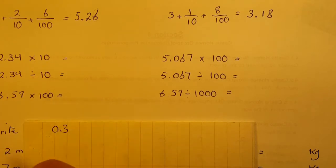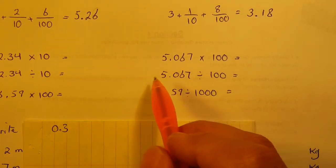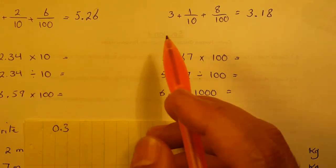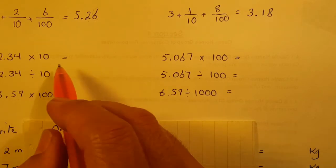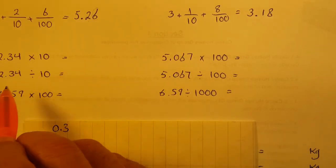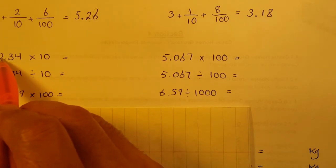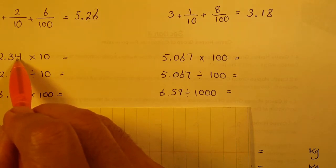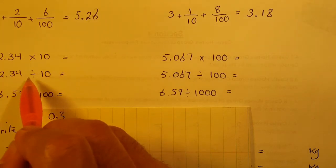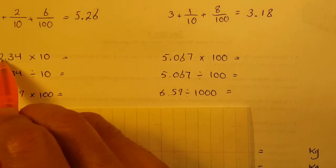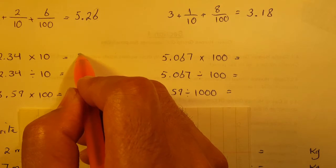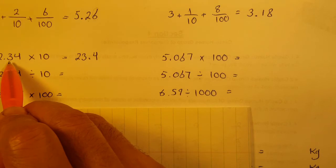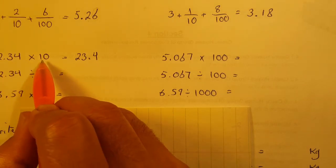Now, 2.34 times 10. These are decimals multiplied or divided by 10, 100, or 1000 — we have done this previously. Times 10 moves the decimal to the right; dividing moves the decimal to the left. So 2.34 times 10 is 23.4 — the decimal moves one digit to the right because we have one zero.